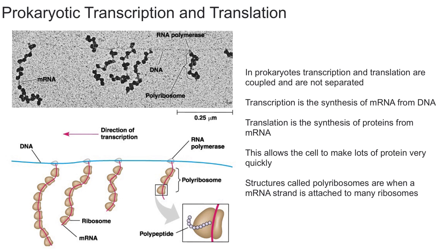In contrast, eukaryotes have a nucleus which separates the ribosomes from the mRNA. In the nucleus is where the DNA is transcribed into mRNA. In eukaryotes, the mRNA has to be processed in the nucleus before it's sent out into the cytoplasm, where the ribosomes can work on the mRNA to make it into a protein.